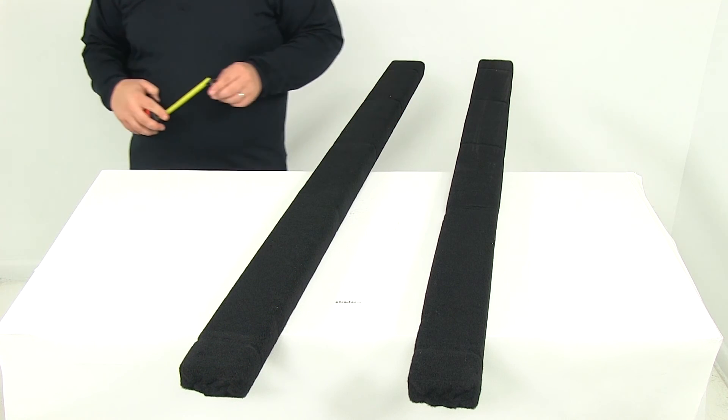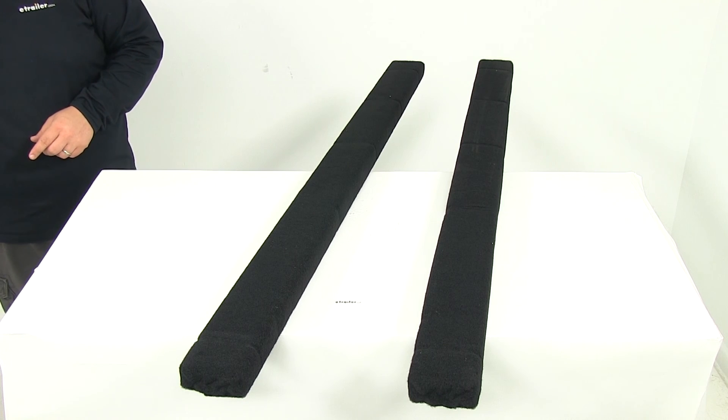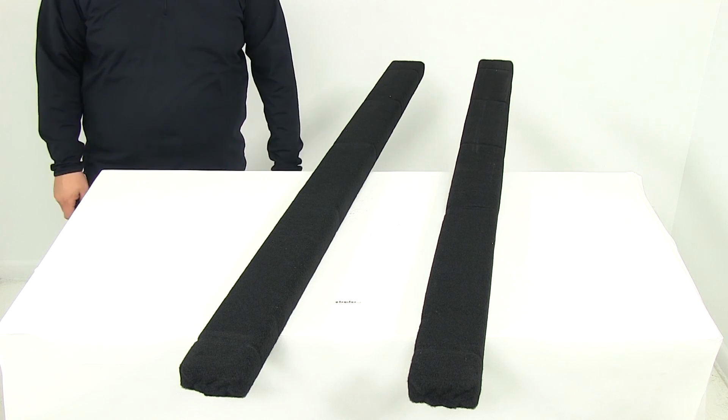That's going to do it for our review of part number CE27820. These are the CE Smith carpeted bunk boards for boat trailers. And again, you're going to get two boards, and they're going to measure about five feet long.